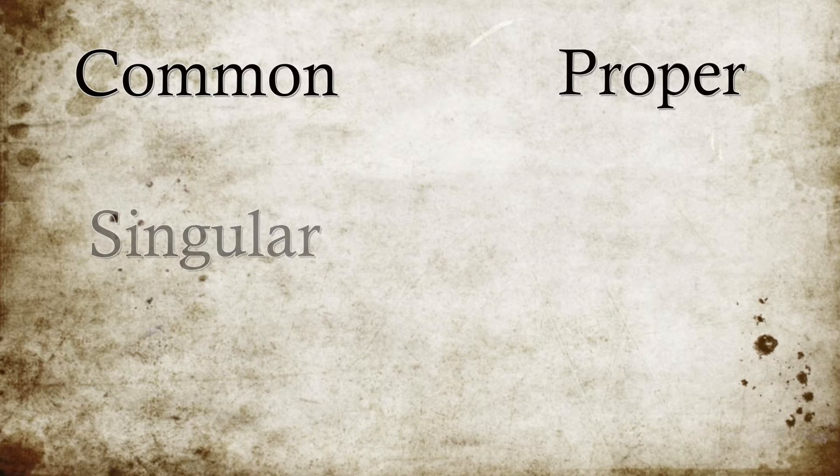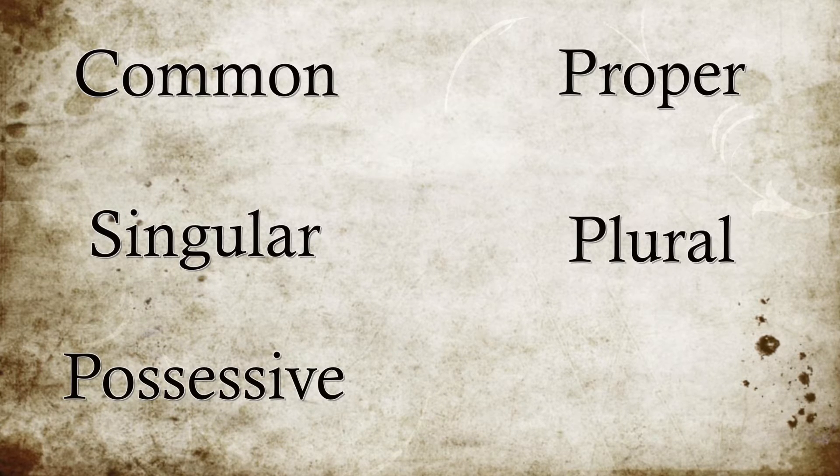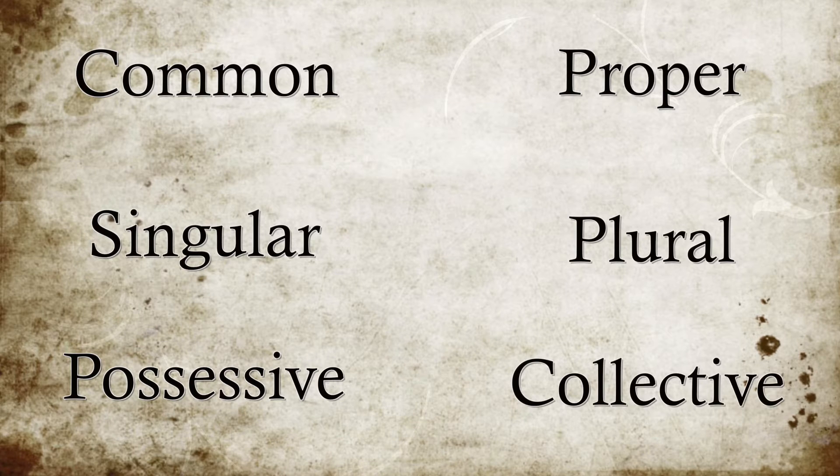But did you know that we have six other categories of nouns that we need to go over? And so that's what I'm going to be going over today. Here are the six different types of nouns that we're going to be learning about in class: common nouns, proper nouns, singular nouns, plural nouns, possessive nouns, and collective nouns.